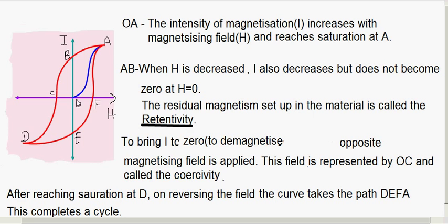To summarize: retentivity is the residual magnetism left when you reduce the magnetizing field to 0; coercivity is the reverse field required to completely demagnetize the specimen. When H is reversed and increased further, at point D the specimen reaches saturation in the reverse direction. From D, increasing back in the original direction, the curve follows path D-E-F-A, closing at point A. This gives one complete cycle, and the graph O-A-B-C-D-E-F-A represents a complete cycle of magnetization and demagnetization — this is called the hysteresis loop.